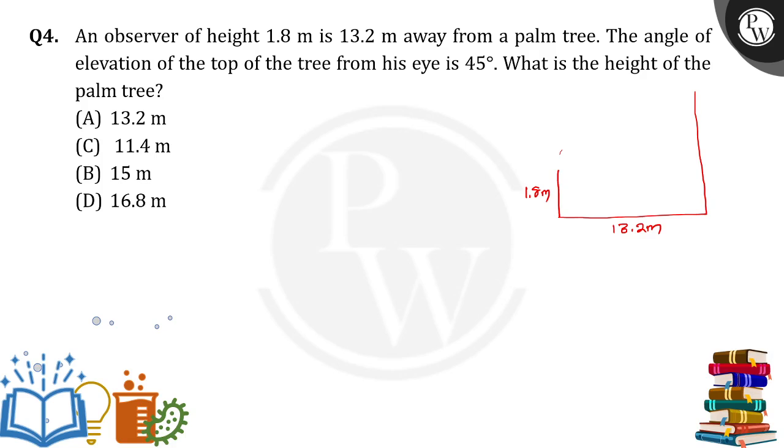So he is standing 13.2 meter away from the palm tree. Now the angle of elevation of the top of the tree from his eye. So he is here. The height of the observer is given, so we have to consider it.